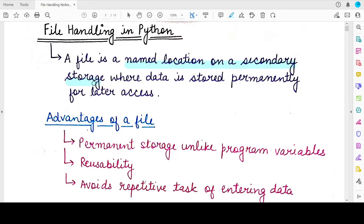So if you save a file in a secondary memory, the contents of the file will still be retained even if you close the program from which the file was written.